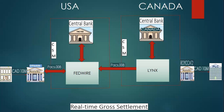Once integrated and simplified, one message can be sent from the central bank or the Fedwire system of the USA to the Lynx system of Canada, which will settle the funds to the beneficiary bank, and the beneficiary bank will then transfer the funds to the PLC customer.